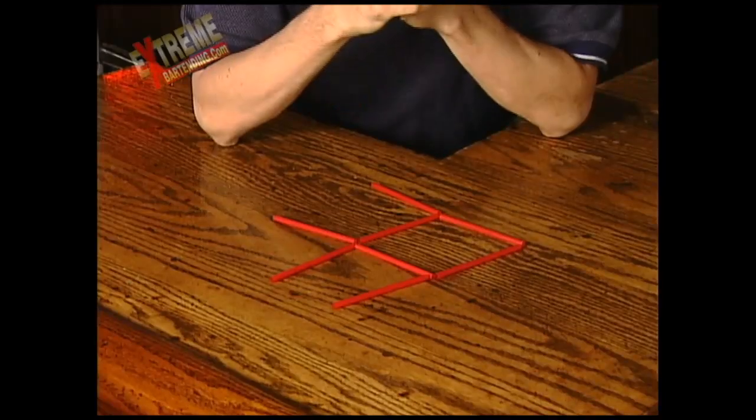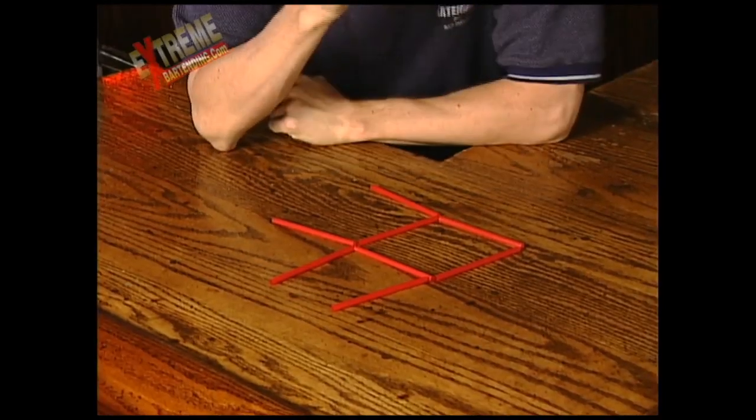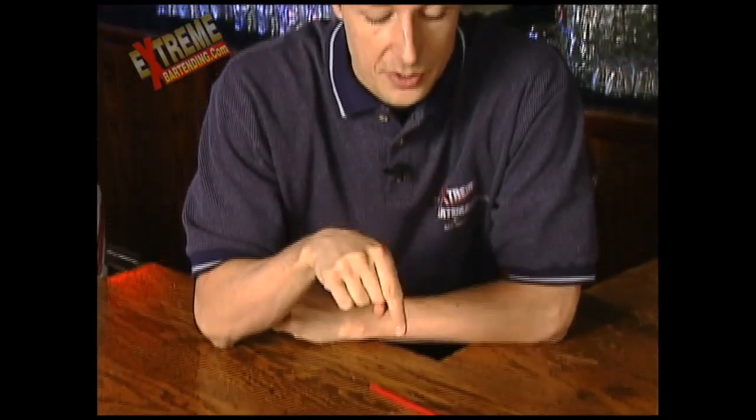Now, if you can see this fish here, what you want to do by moving three straws, you want to help this poor fish swim in the opposite direction. So by moving three straws, help the fish move in the opposite direction.